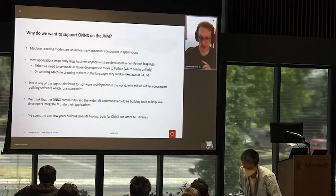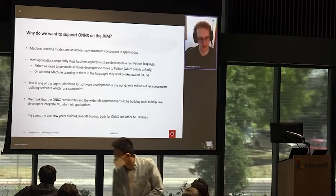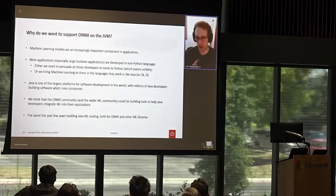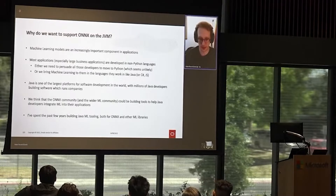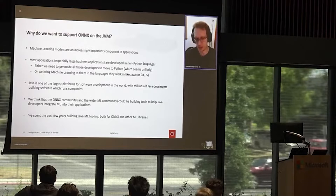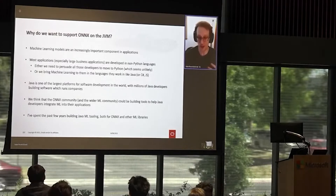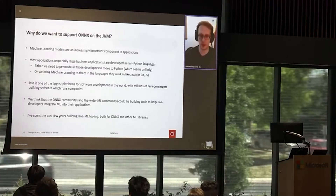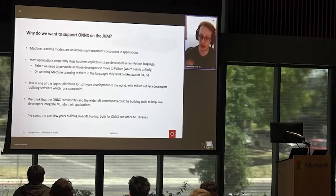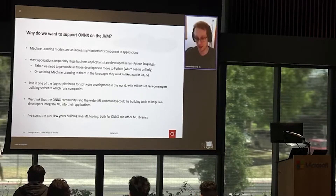We could either get all those developers to move to Python, which doesn't seem very likely, or we could bring machine learning to them in the languages they work in, like Java or C# or JavaScript. Java is one of the largest platforms for building live software applications in the world. There are millions of Java developers, and we think it'd be good for the ONNX community and the wider ML community to help them integrate ML into their applications by meeting them where they are in the JVM.